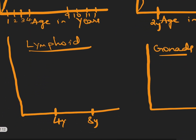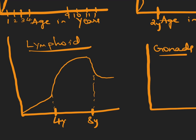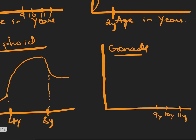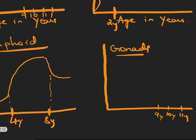Lymphoid organs grow continuously until around four years, but they peak in growth between four to eight years of age. After that, lymphoid growth slows down and plateaus. So four to eight years is the age of peak lymphoid growth.